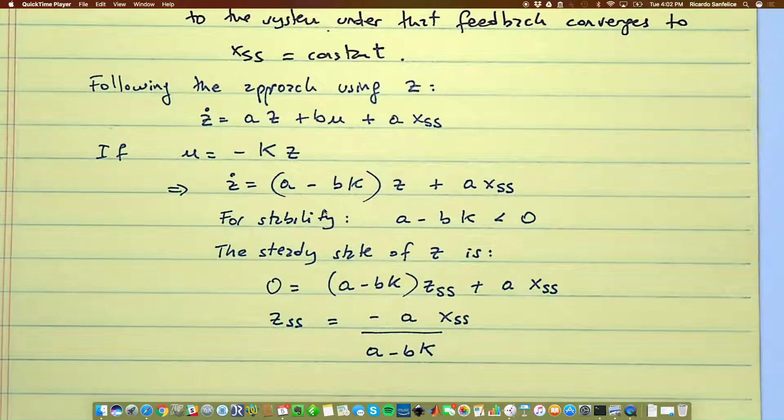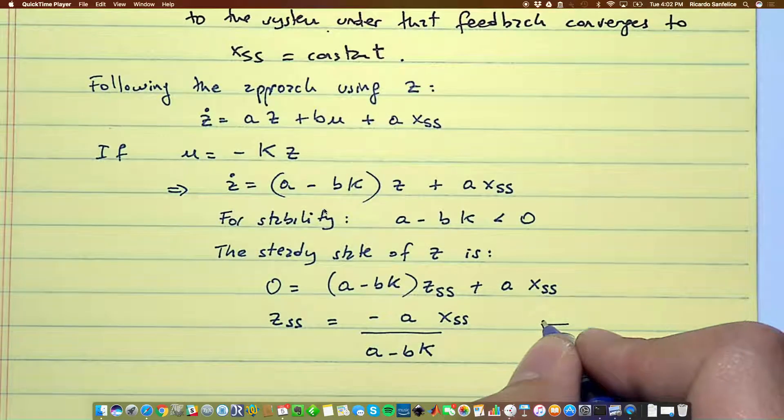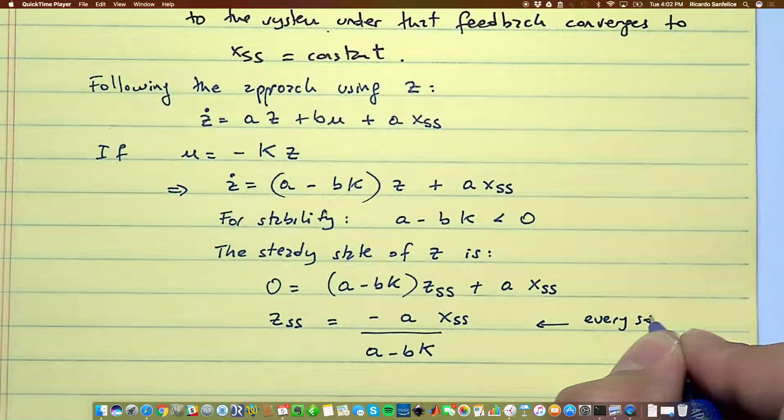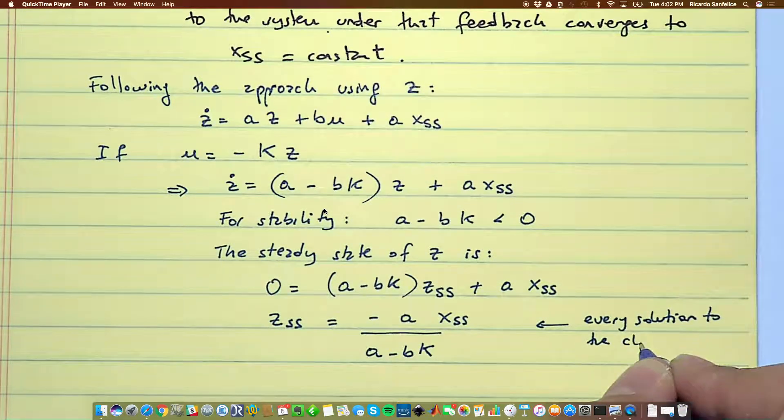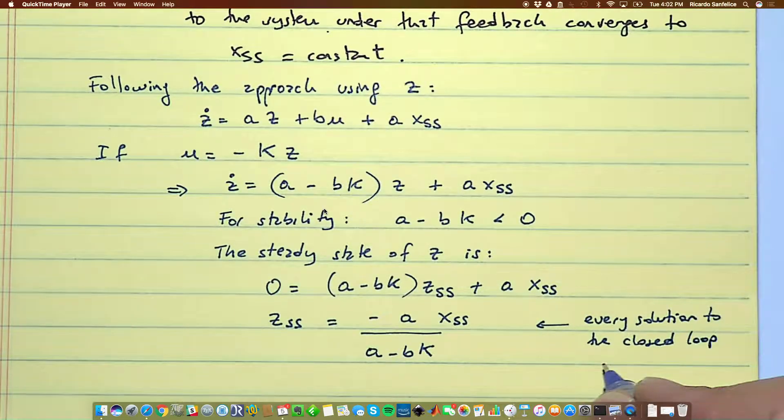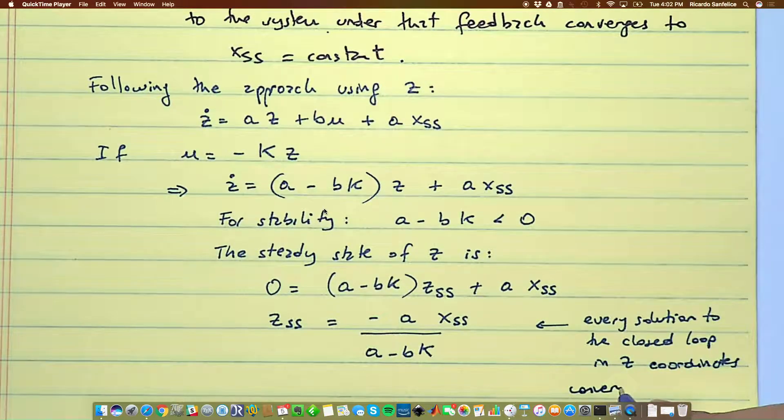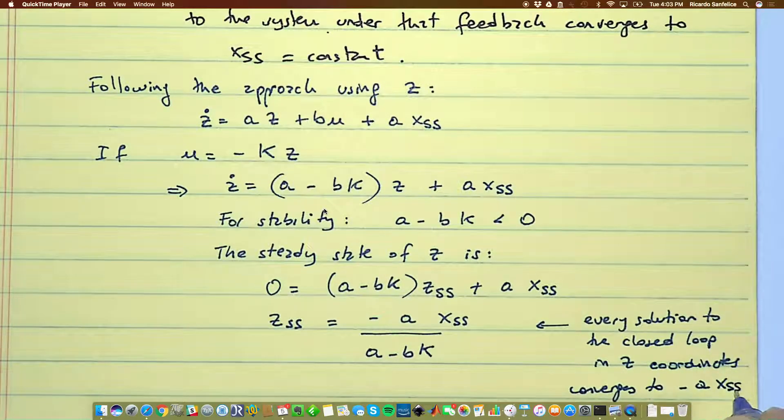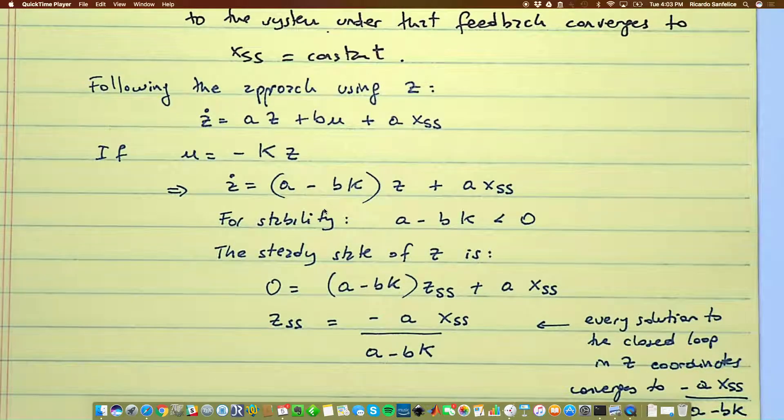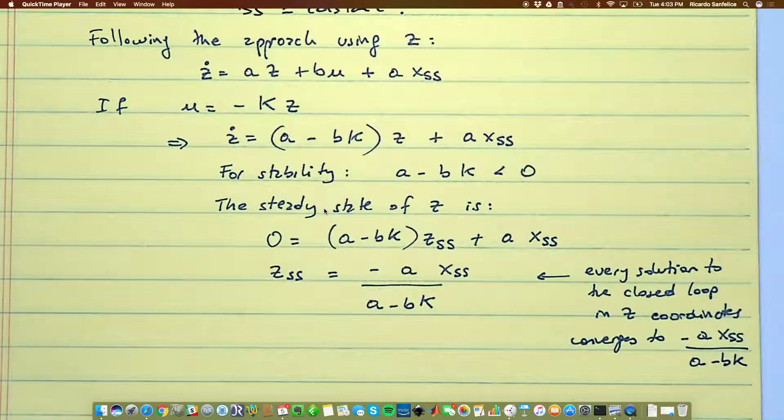So what we see here is that even though we get stability, this implies that every solution to the closed loop system in z coordinates converges to minus a x_ss over a minus bk. So z will converge to a number different than zero, therefore in the x coordinates, since z is equal to x minus x_ss, x will converge to a number different than x_ss, so we have not accomplished what we wanted to accomplish.